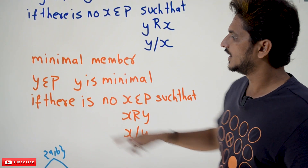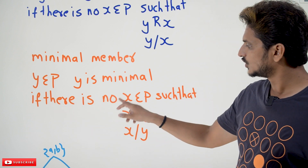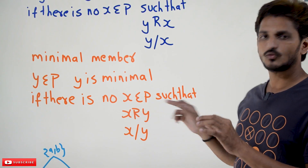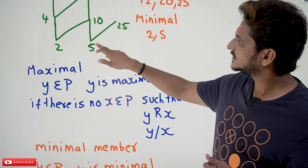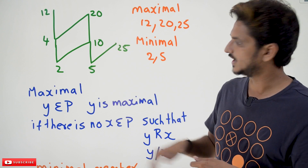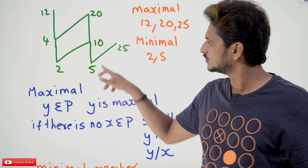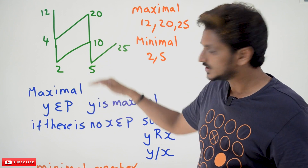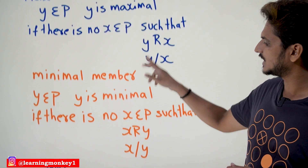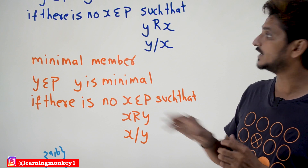Similarly, minimal member: let Y belong to the poset. Y is a minimal member when there is no X belonging to P such that X relates Y. X relates Y means, below Y, we are having an element. For example, assume 5 is a minimal member. If you find any other element X in the poset such that X relates Y — meaning an element exists below it — then you cannot say it is a minimal member. Below it you should not have any other elements; only then we can say it is a minimal member.